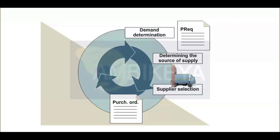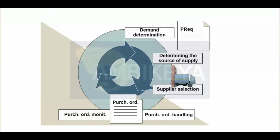Supplier selection: comparing the prices in the different quotations makes selecting suppliers easier, and letters of rejection can be sent automatically. Purchase order handling: when creating purchase orders, the system provides you with the entry process. Purchase order monitoring: the purchaser can monitor the processing status of the purchase order in the system. For example, the purchaser can determine whether the goods or the invoice have been received for the corresponding purchase order item. Dunning processes are also supported.